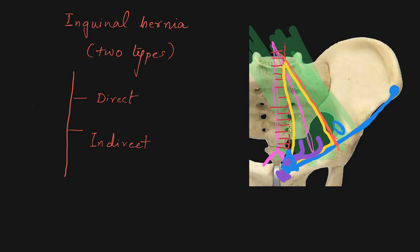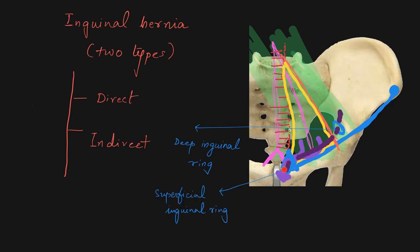In indirect inguinal hernia, instead of passing through somewhere in the inguinal canal, the content passes through the deep inguinal ring. From the deep inguinal ring it passes through the inguinal canal and exits through the superficial inguinal ring — that is called indirect inguinal hernia.